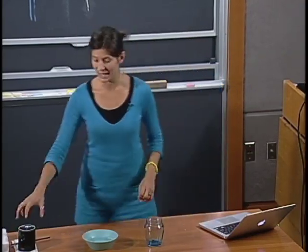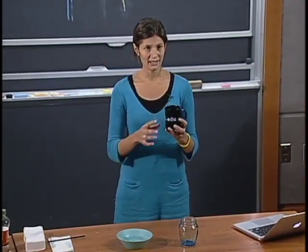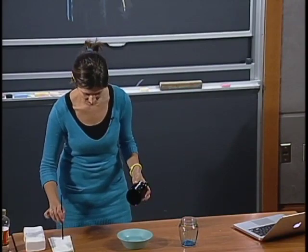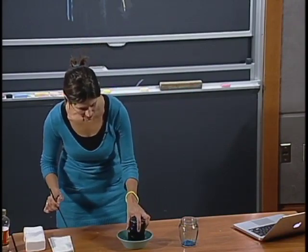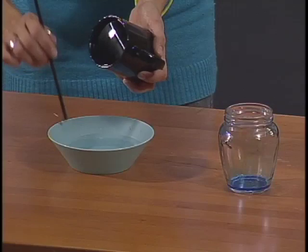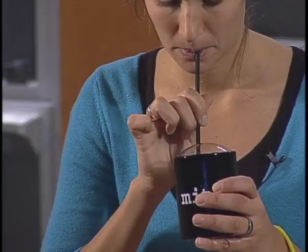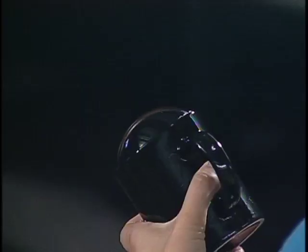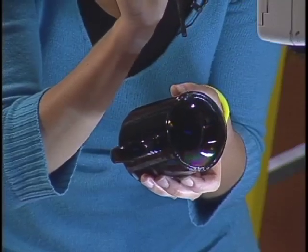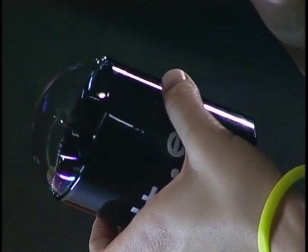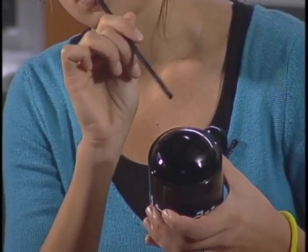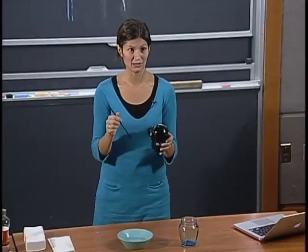We will finish now with one last experiment. We take again the black mug and the soapy solution. This time we try to make a semi-sphere, and I want you to look closely at the patterns. Now, in this way, I'm creating some vortices on the surface of the bubble. Unfortunately, you cannot see them right here, but you can see them in the classroom once you try to do it yourself.